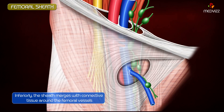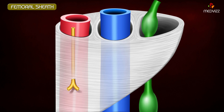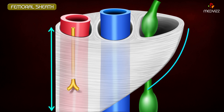Inferiorly, the femoral sheath merges with the connective tissue around the femoral vessels. The femoral sheath is asymmetrical in shape — the lateral wall is more vertical, while the medial wall is more oblique, directed downwards and laterally.